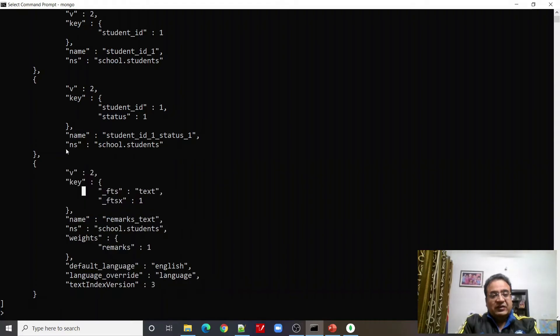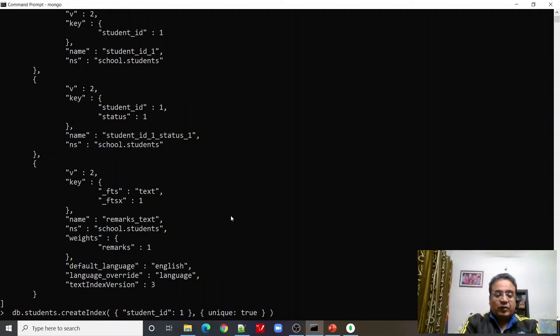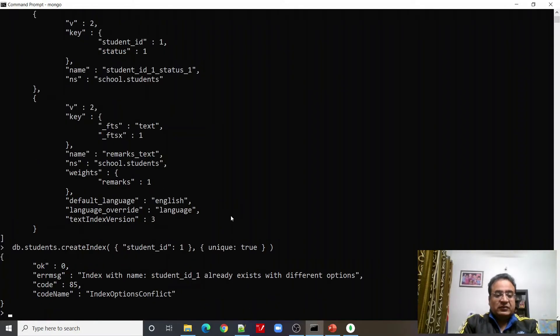It shows us that we have one, two, three and four. These are the type of indexes, keys involved in these indexes.